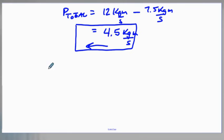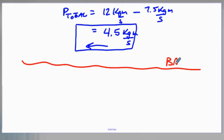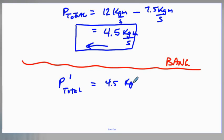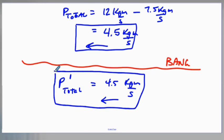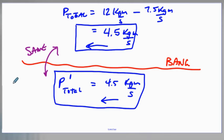Now we have the collision. They bang into each other. We know that our total momentum after the collision equals 4.5 kilogram meters per second in that direction. That's the conservation law — what we had before equals what we had after. So all we need to do now is figure out the momentum of each of the cars and we're done.